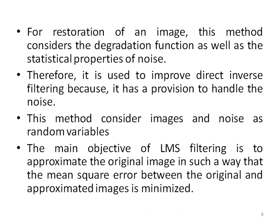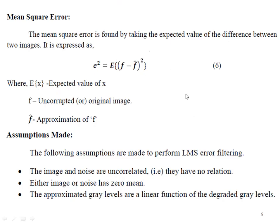We have to find the approximate of the original image. We do this by minimizing the mean square error. The mean square error is defined as: e² = E[(f − f̂)²], where f̂ is the approximation of f, the original image.